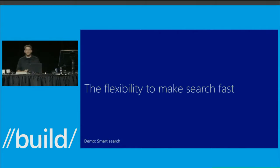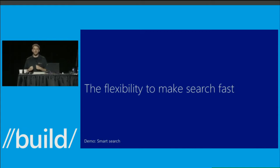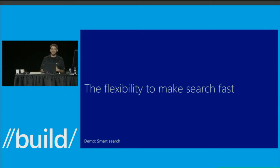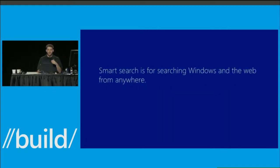During our design process we used this flexibility to really optimize for speed — to get the user to specifically what they want, whether it's launching an app, playing music, drilling into specific content in one of their apps, or launching a file. We could do that all really fast, knowing exactly what our search was supposed to be great at. Smart search is the fastest way for searching Windows and across the web.